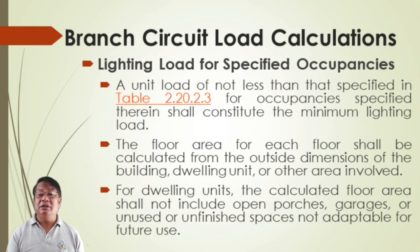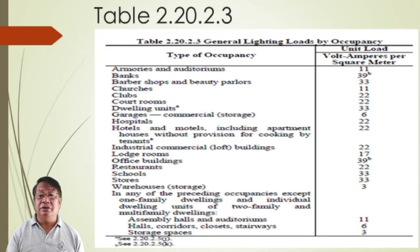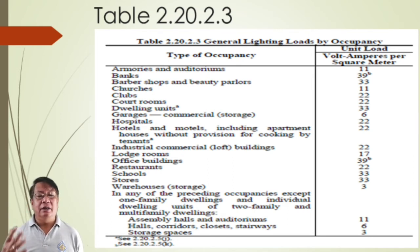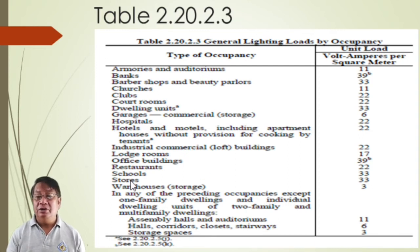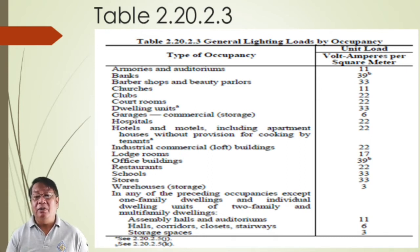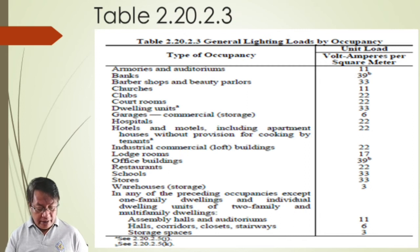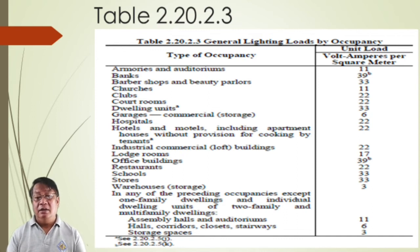This is the table for general lighting loads by occupancy, our estimation in volt-amperes per square meter. For example, for schools, the rated apparent power for classrooms is more or less 33 volt-amperes per square meter. So if we have 1,000 square meter classrooms, multiply by 33 to get 33,000 VA or 33 kVA as our power allocation for that area.